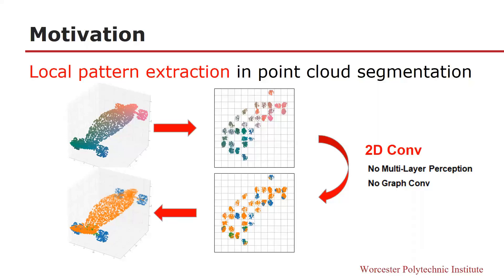In this paper, we are trying to project 3D point cloud into a 2D image space, so that we can take advantage of the local pattern extraction in conventional 2D CNNs for point cloud semantic segmentation.